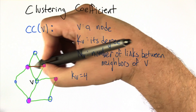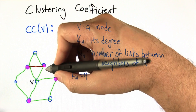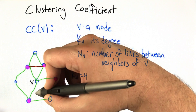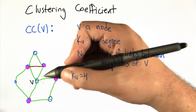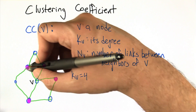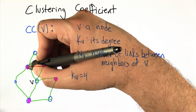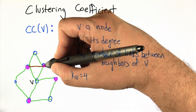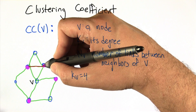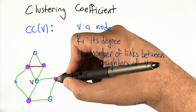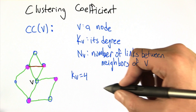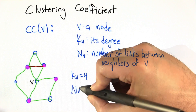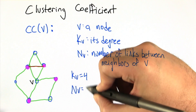Now let's look at the links between these neighbors of v. There's this one that goes between the two pink nodes, and that seems to be it. This node isn't connected to any other pink node, and this one's not connected to any other pink node either. So in this case, n_v is 1.